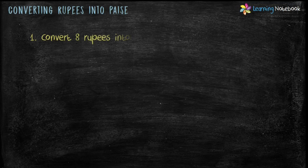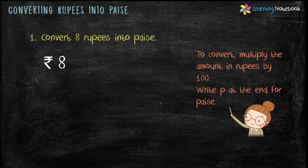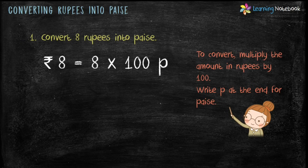Let's solve a few questions to understand this concept. Question: convert 8 rupees into paise. To convert rupees into paise, multiply the amount given in rupees by hundred and write P at the end for paise. So here, Rupees 8 equals 8 × 100 paise, which is equal to 800 paise.